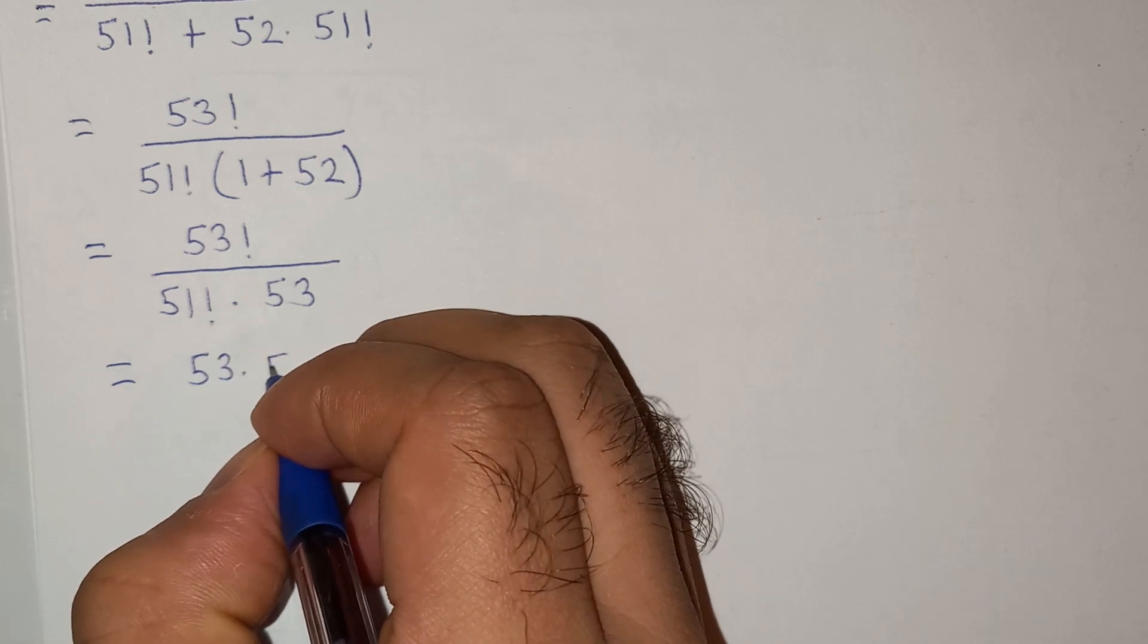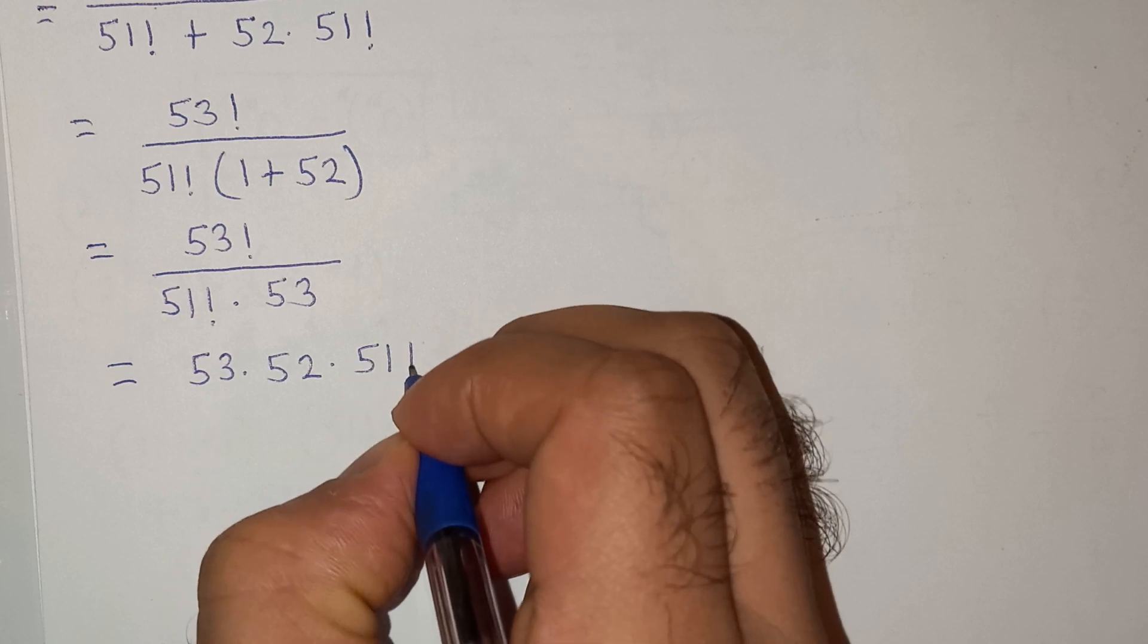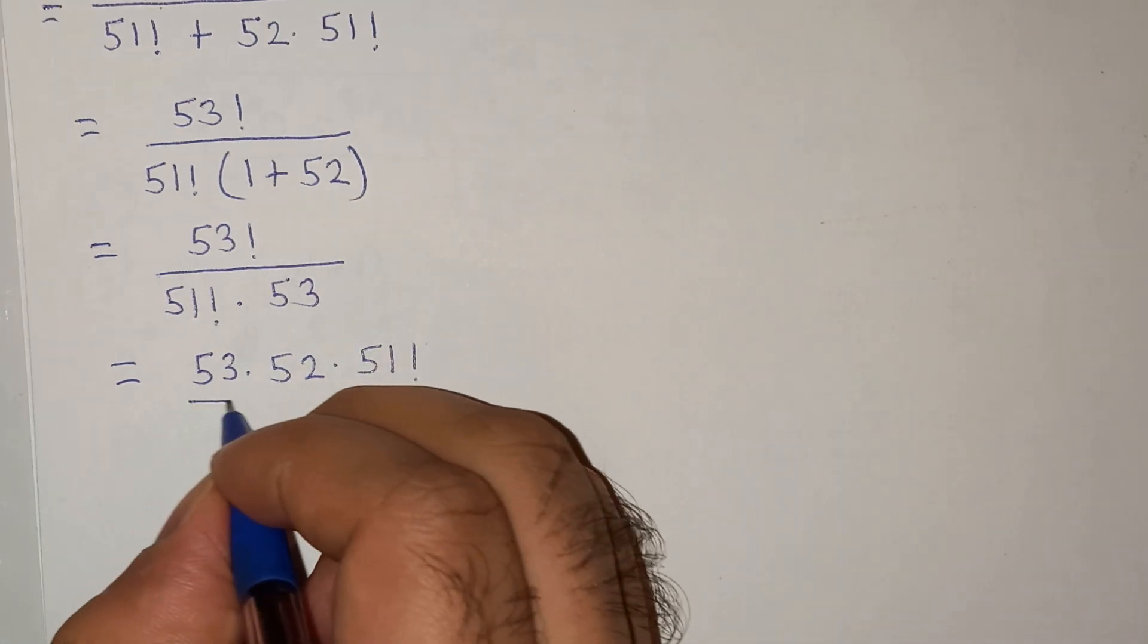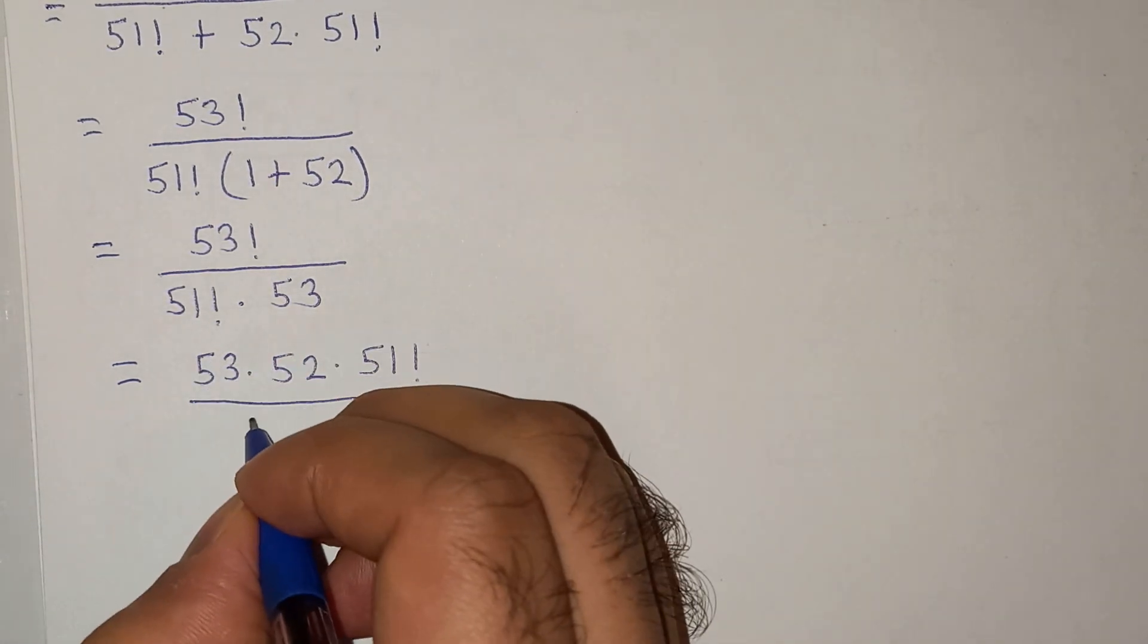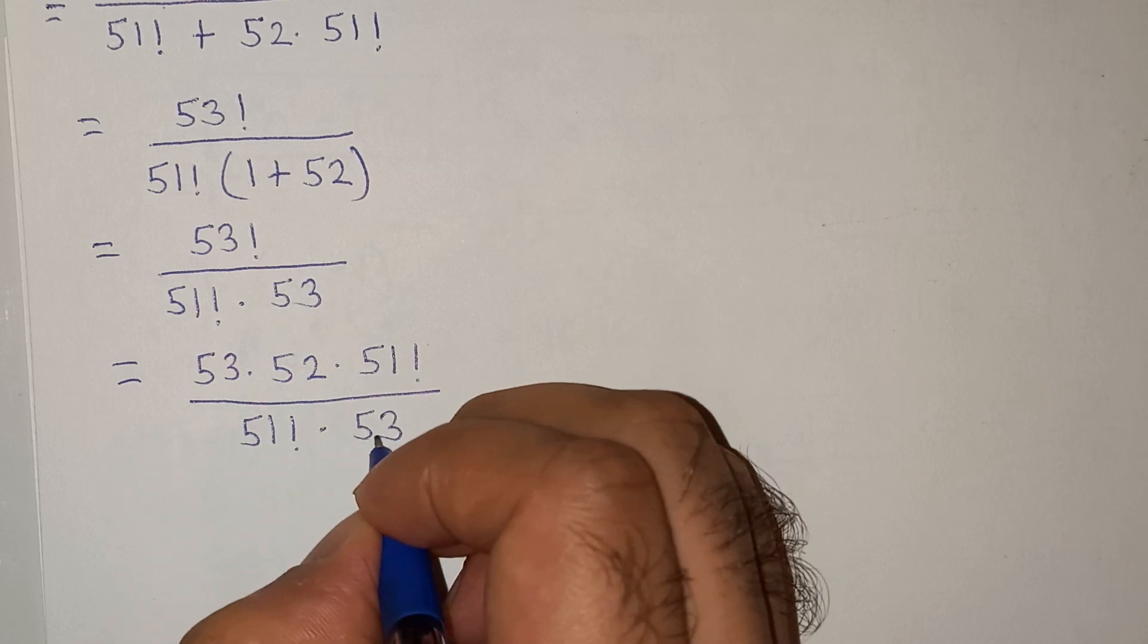So 53 factorial can be written as 53 multiplied by 52 multiplied by 51 factorial divided by 51 factorial multiplied by 53.